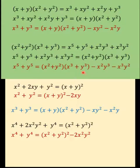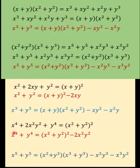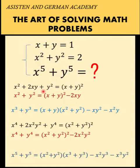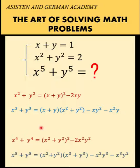We now have these different expressions for x squared plus y squared, x cubed plus y cubed, x to the fourth plus y to the fourth, and x to the fifth plus y to the fifth. Let's erase this part and retain only the equations that we need — we have this x to the fourth plus y to the fourth.